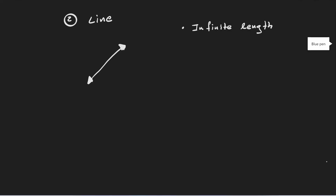The next question is: how do we name lines? Note that lines are composed of points — it's a set of points. Let me put some points on this line. Let's call this point A, B, C, and D. Let's say that this line passes through these four different points: A, B, C, D. We only need to identify two different points to give a name to this line. So let's choose point A and point B. I can give a name to this line and refer to it as line AB.